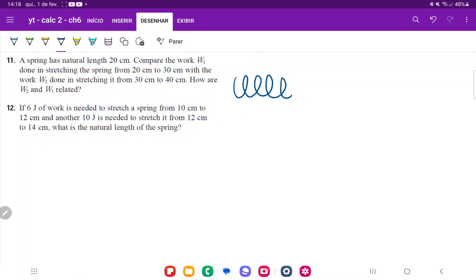For problem number 11, we're given that a spring has a natural length of 20 centimeters. Since we're working with metric, we convert it to meters, so this natural length is 0.2 meters.